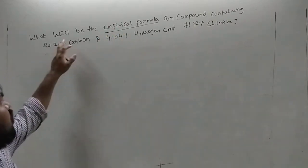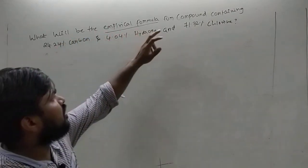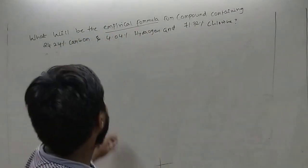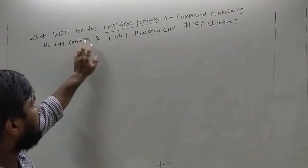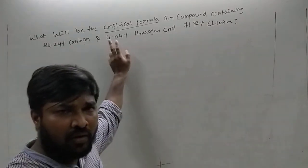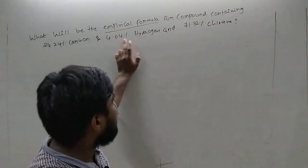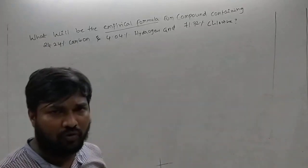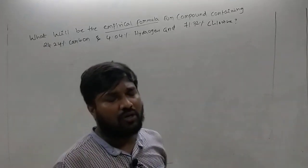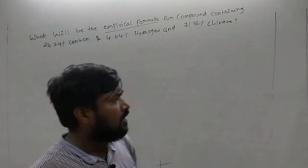So the problem is: what will be the empirical formula for a compound with 24.24% carbon, 4.04% hydrogen, and 71.72% chlorine? How do we solve this?